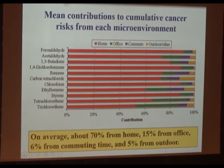We found that formaldehyde, 1,3-butadiene, benzene, and others are the major risk contributors for cumulative cancer risks in urban China, accounting for 88% of the whole risk. Looking at the contribution to cumulative cancer risk from each microenvironment, home contributes most, followed by the office, then the community, then outdoor.